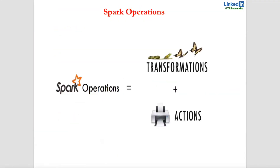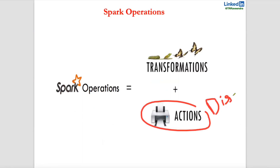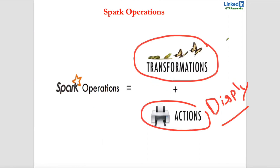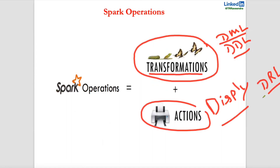If you are going to display the data, print the data, or save the data, that is called an action. If you are going to change anything — like changing metadata or changing data — just like in databases we have DDL (Data Definition Language) and DML (Data Manipulation Language), changing structure or changing data is a transformation. Data retrieval — printing, displaying, or saving existing data — is called an action.